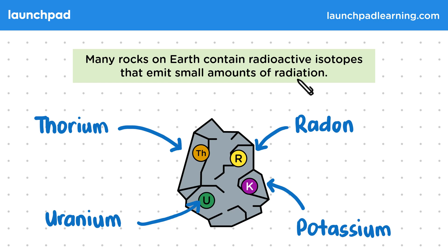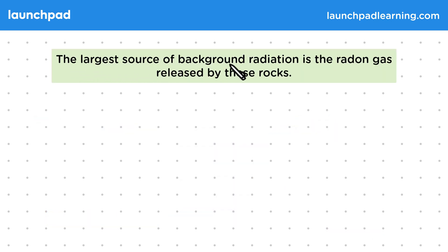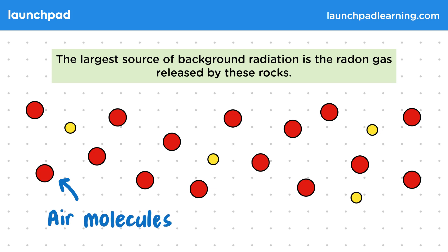So what happens if these chemicals are released into the atmosphere? The largest source of background radiation is the radon gas released by these rocks. Air contains a small amount of radon, and this contributes to background radiation as the radon emits radiation towards the surface of the Earth.